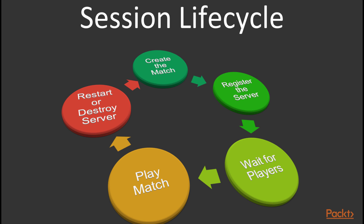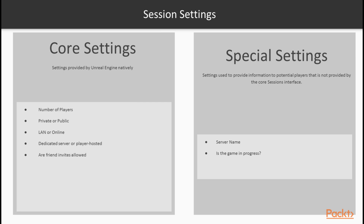There's one more important thing we need to know about sessions before moving on. When creating a session, the host provides a list of session settings which specifies important information about the game to be created. Most notably among these are: the number of players allowed, whether the session is advertised as public or private, whether the session is hosted as a LAN server, whether the server is dedicated or player-hosted, and whether friend invites are allowed. Alongside the built-in settings, there can also be an array of user-defined settings — which I like to refer to as special settings. These are useful to hosts and potential players alike; examples include a custom server name and whether the game is in a lobby or in progress. I'll be showing you how to implement these special settings as well.